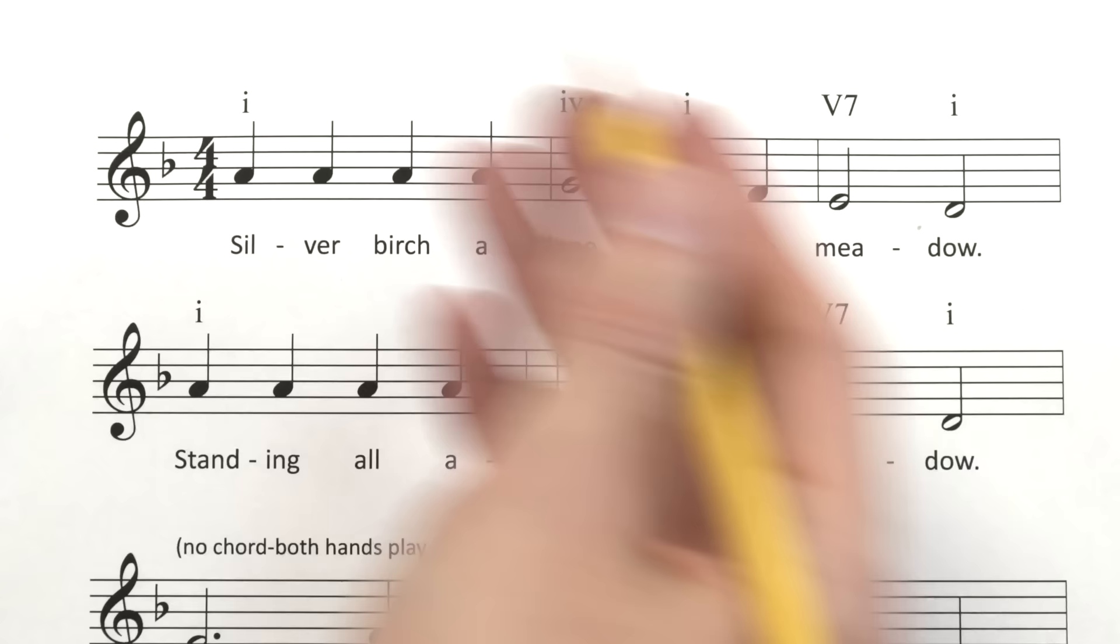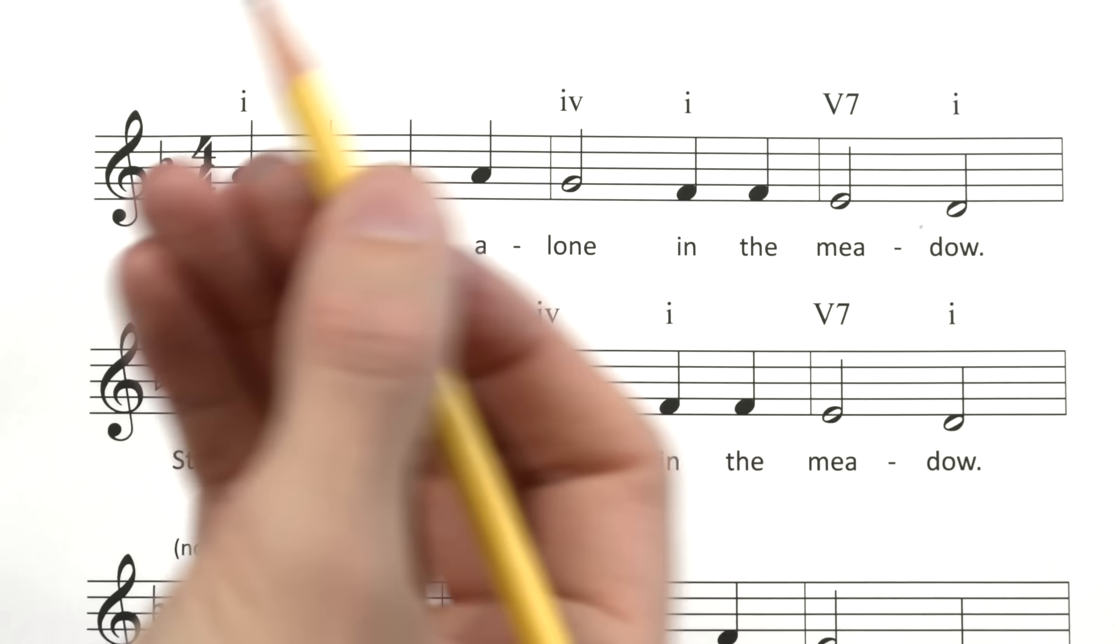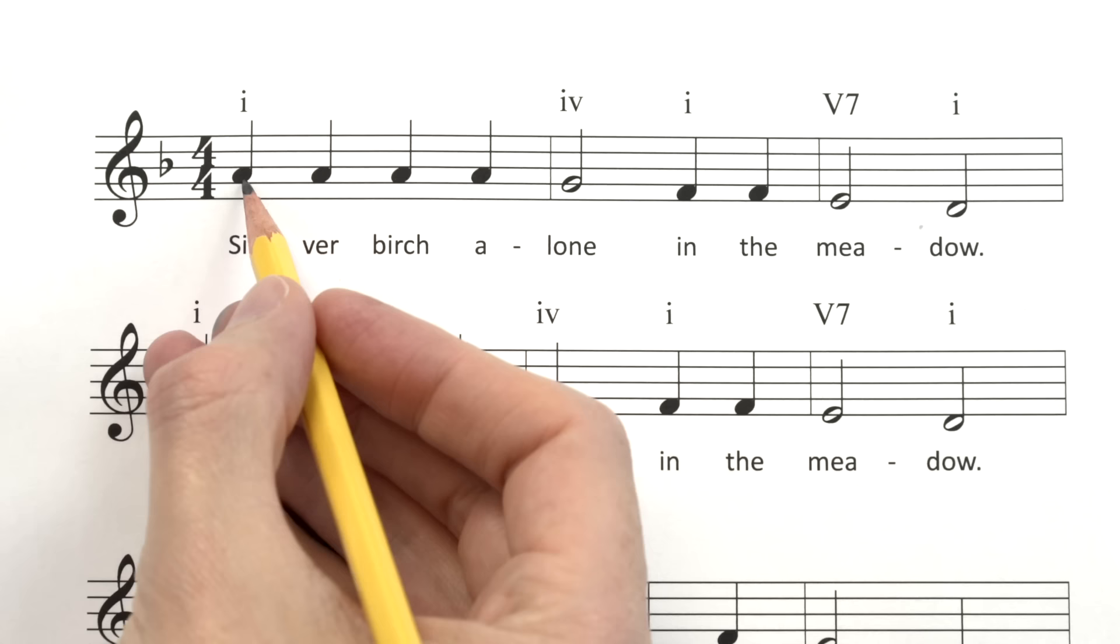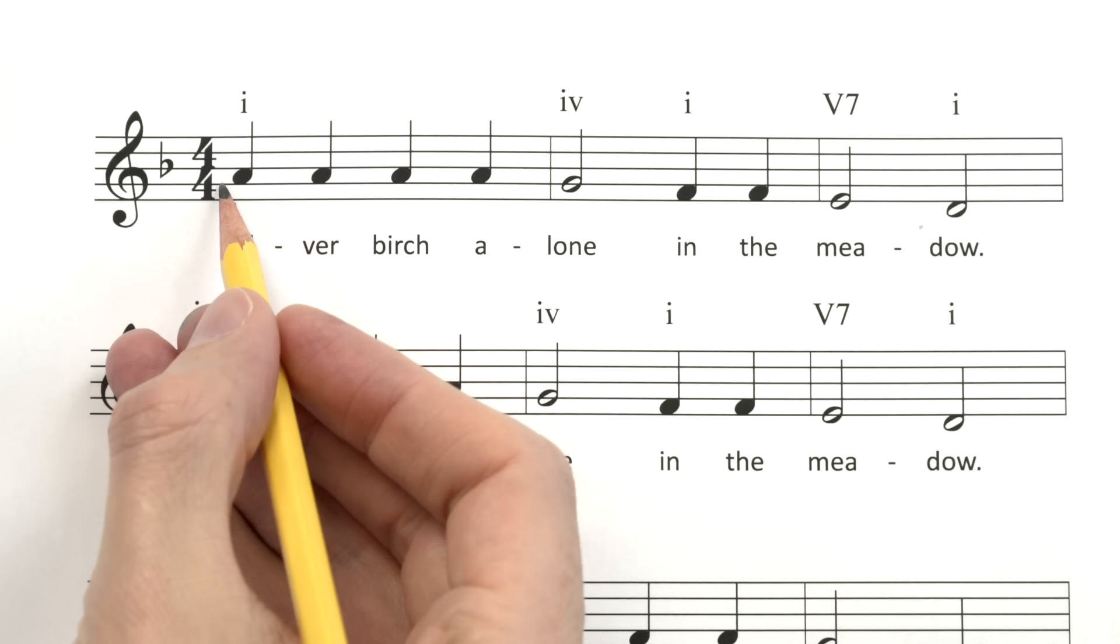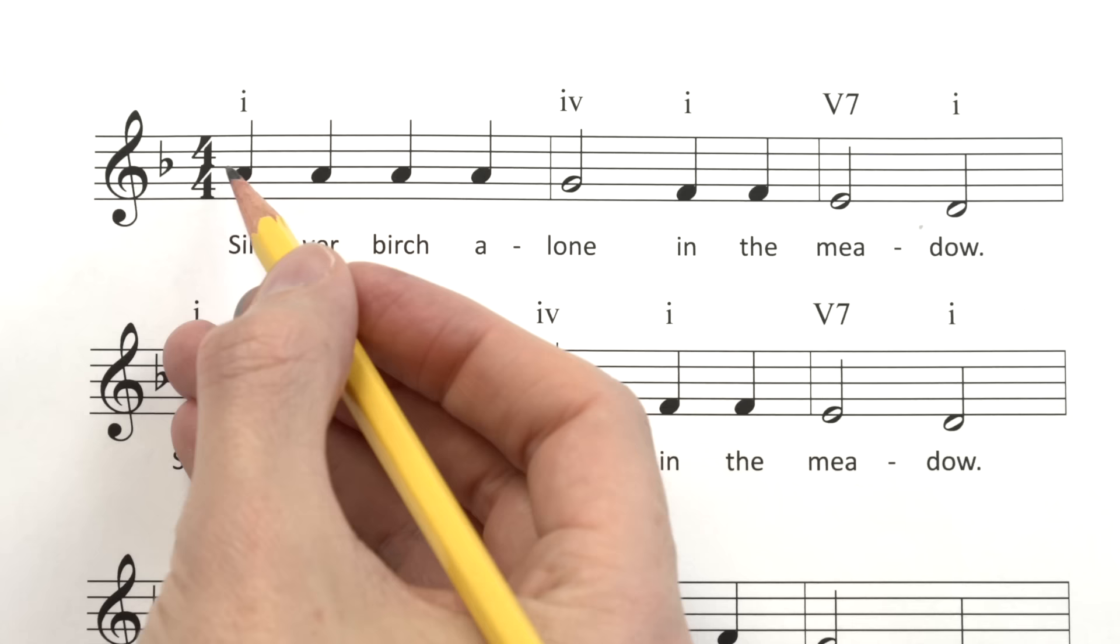So we've got our treble clef. We've got our key signature which tells us we're in D minor today. Four four time signature, four beats in every measure, and can you tell me the letter name of the note we start on? Looks like it's a step above the G line. So if you said it's an A, you're correct. We start on an A.